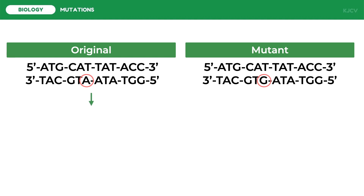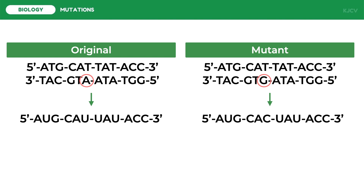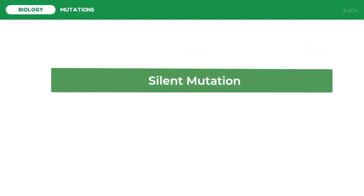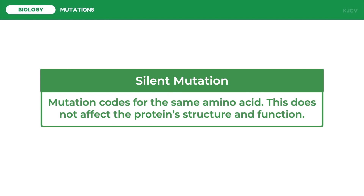We get the original mRNA transcript and a mutant mRNA transcript. Translating these mRNA transcripts using the genetic code chart, the original mRNA strand is translated to methionine-histidine-tyrosine-threonine. The mutant strand is also translated to methionine-histidine-tyrosine-threonine. Comparing the two, we cannot see any difference between the original and mutant polypeptide products even though a mutation was introduced. This means the mutation did not have an effect on translation — this is called a silent mutation, as it codes for the same amino acid.